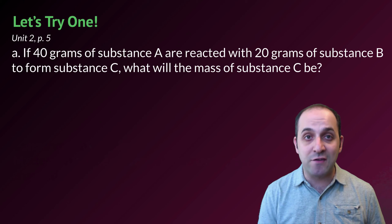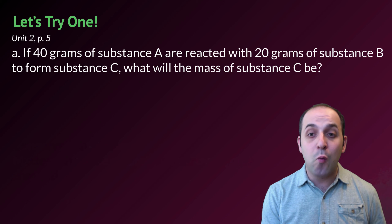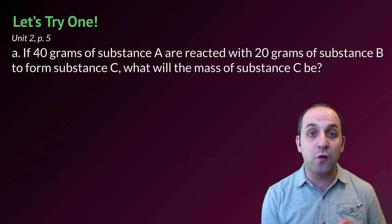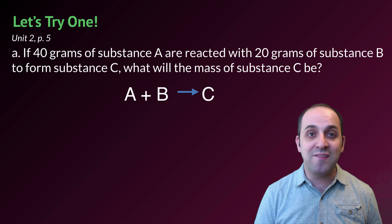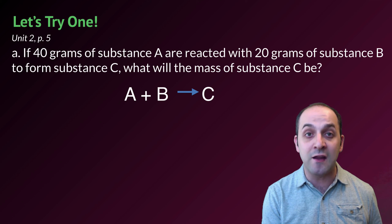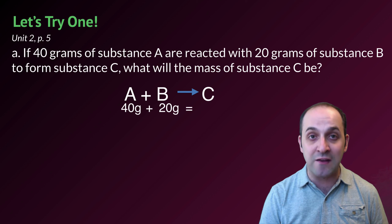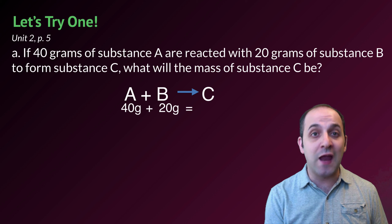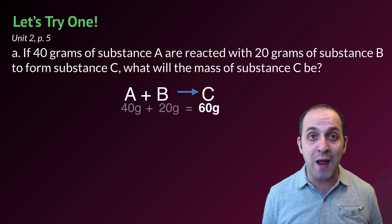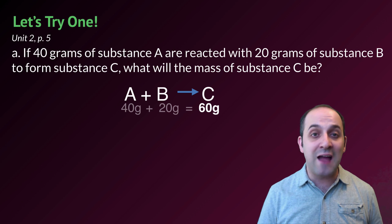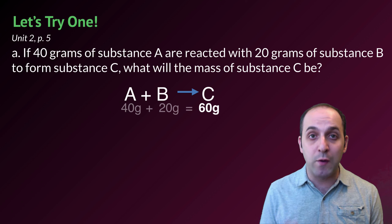Here's a problem using conservation of mass, found on page five of your unit two packet. If 40 grams of substance A are reacted with 20 grams of substance B to form substance C, what should the mass of substance C be? Pause the video and try to solve it. Substance A plus substance B combine to form substance C — a chemical change. We start with 40 grams plus 20 grams, so we should expect 60 grams of substance C, because conservation of mass requires the total mass to remain equal.